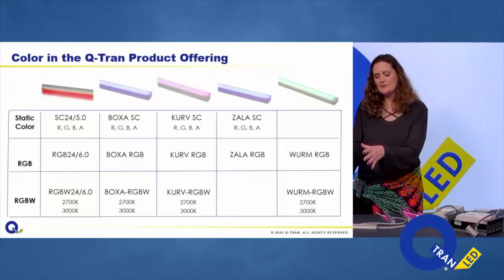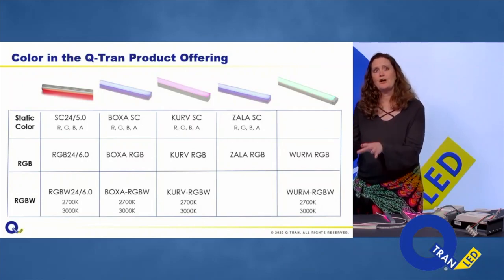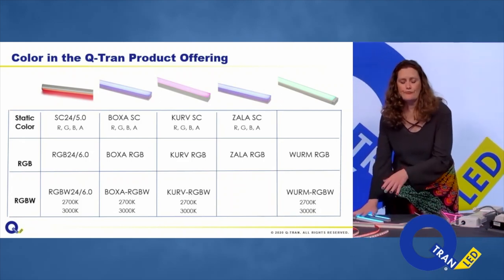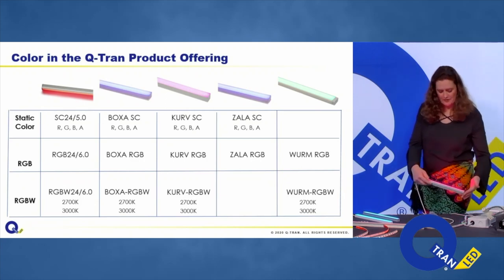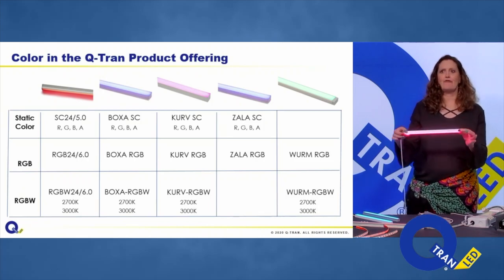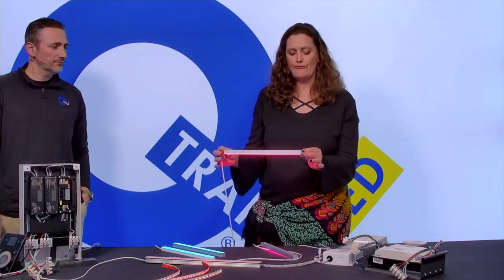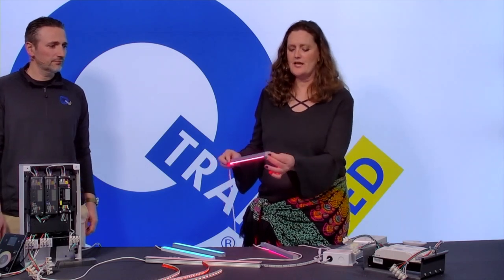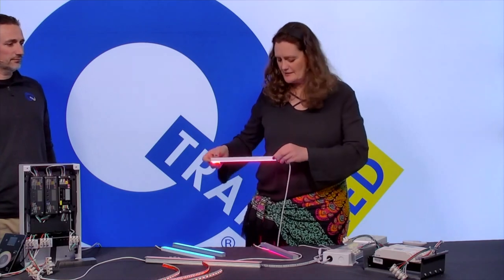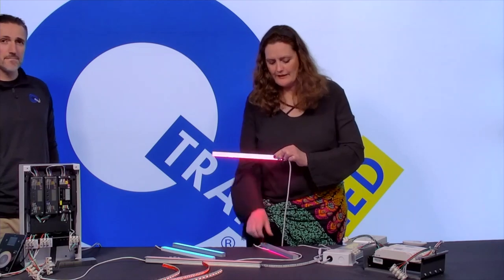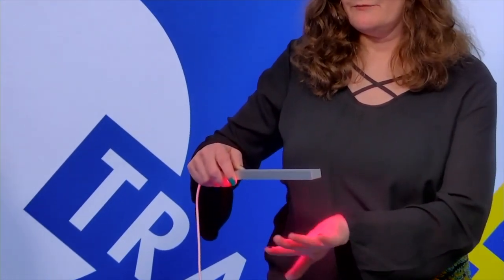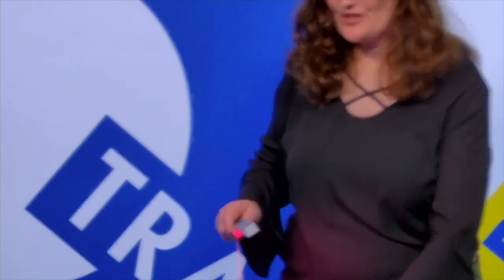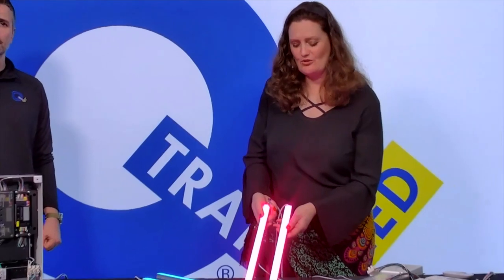RGB and RGBW require more control. We encapsulate our RGB and RGBW in different fixtures: the Boxa, Zala, Worm, and Curve. Coming soon, we'll offer our new Verse family of fixtures with RGB. Here I have our Verse 01 with the proud lens — you can see the edge of the light — and our Verse Flush, which I also have dialed into a pink. Our RGB will be available soon in the Verse family.